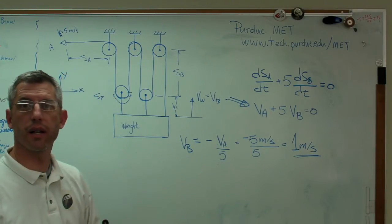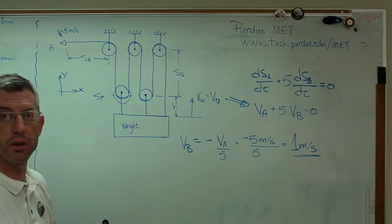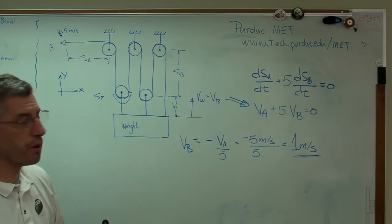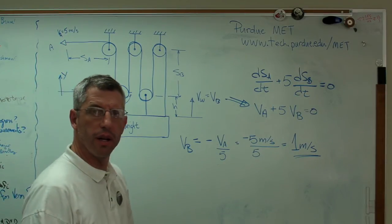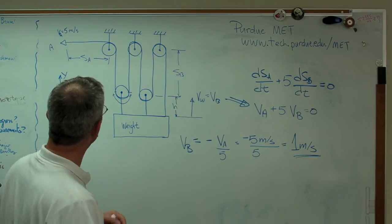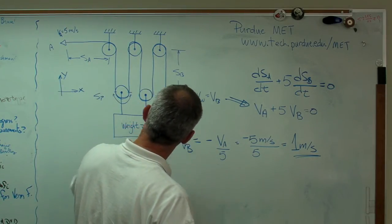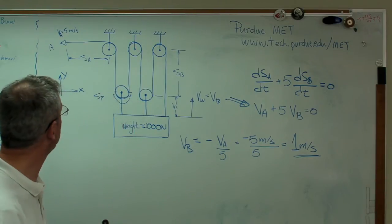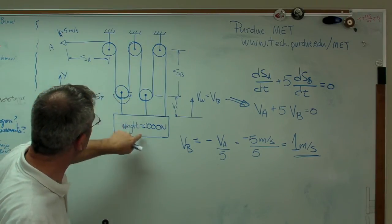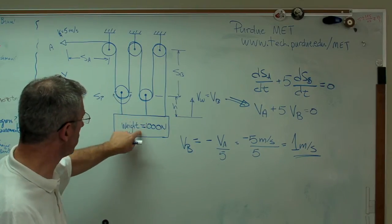This is the exact same problem solution strategy that we used before. One other thing — I wonder how you would figure out the tension required in the rope. Let's say this weighs 1,000 newtons. What tension would I be applying here to make this go up at steady state — no acceleration, just steady state?